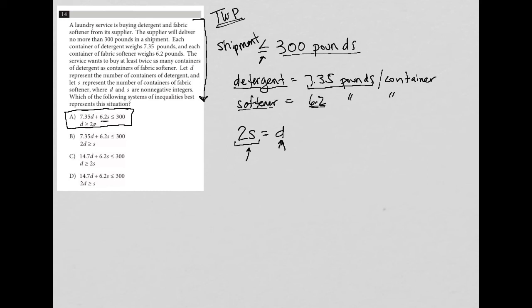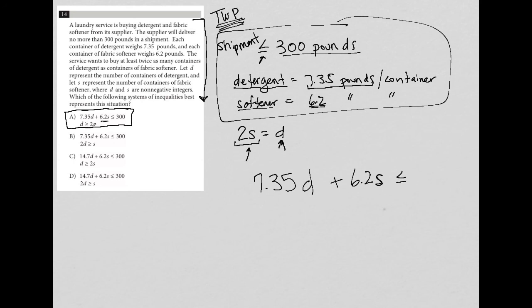Now, we could definitely use more of a translation process here where, using this information that's been provided, I can put that all together and say, 7.35 pounds times the detergent number of containers plus my 6.2 pounds times the number of softener containers. I know that I want to have less than or equal to 300 pounds. So this is in terms of numbers of pounds. So even just by translating this information here, I still end up in that situation.